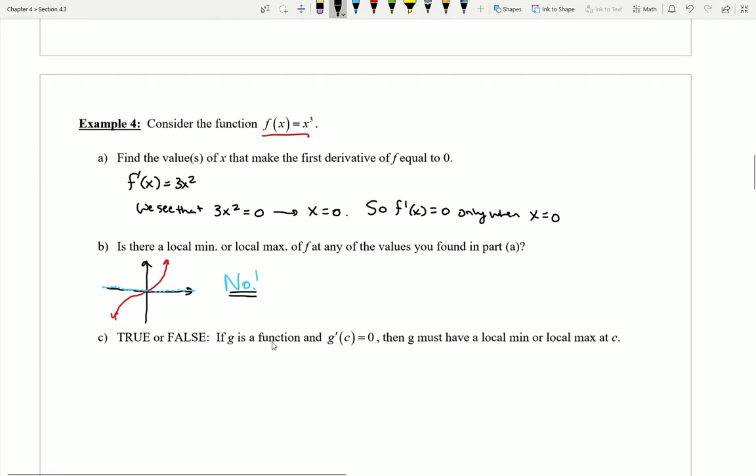This says, let's suppose we come across a function g, and we know that g'(c), that is g' at some x value, gives us zero. There's some tangent line of slope zero on the graph. Then g must have, it must have, a local min or a max at c? It's a question. Is it true or false? Is that true?